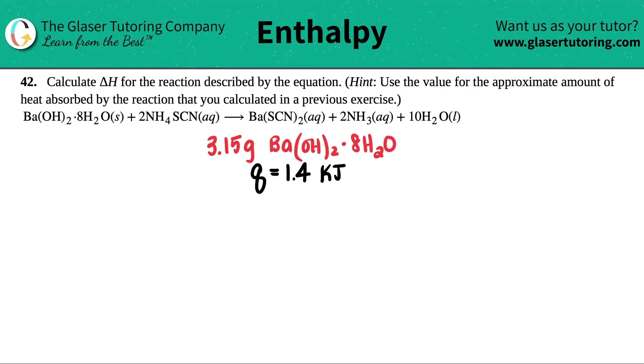Number 42. Calculate the delta H for the reaction described by the equation. Hint: Use the value for the approximate amount of heat absorbed by the reaction that you calculated in a previous exercise.